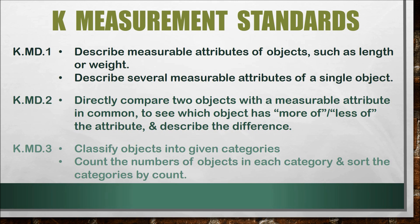They are not listing attributes such as red, yellow, bumpy, or smooth. Students will compare objects with like measurable attributes and classify objects into categories based on these measurable attributes. Students must have a clear understanding of MD1 and MD2 because these standards lay the groundwork for first grade standards asking students to order objects by length, compare lengths, and express length in units.